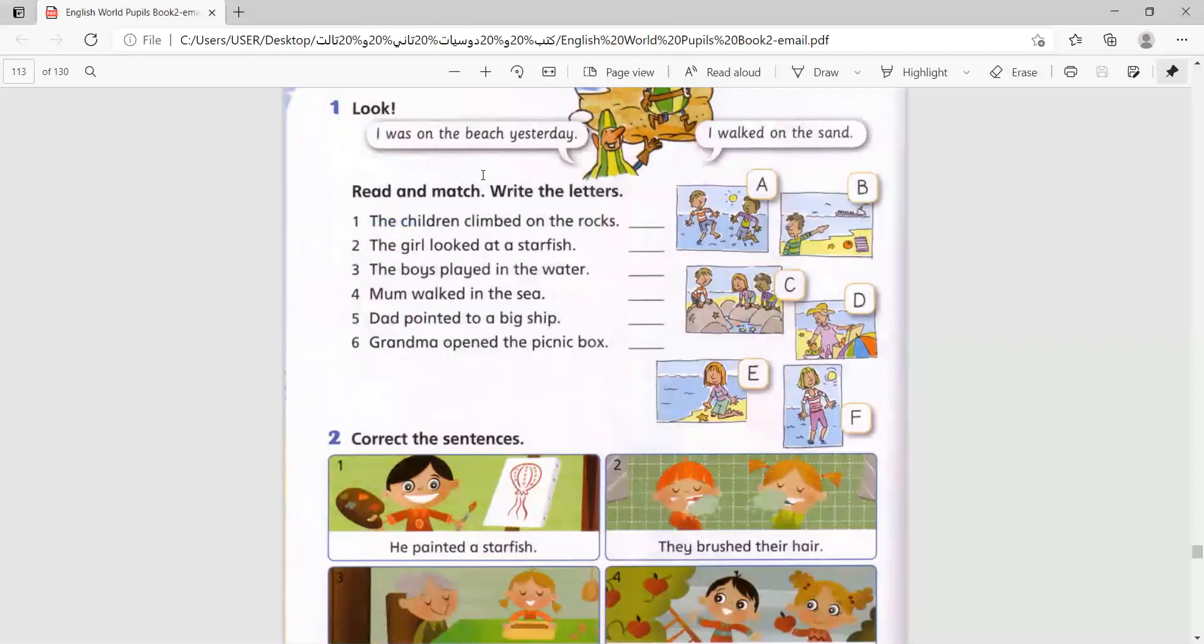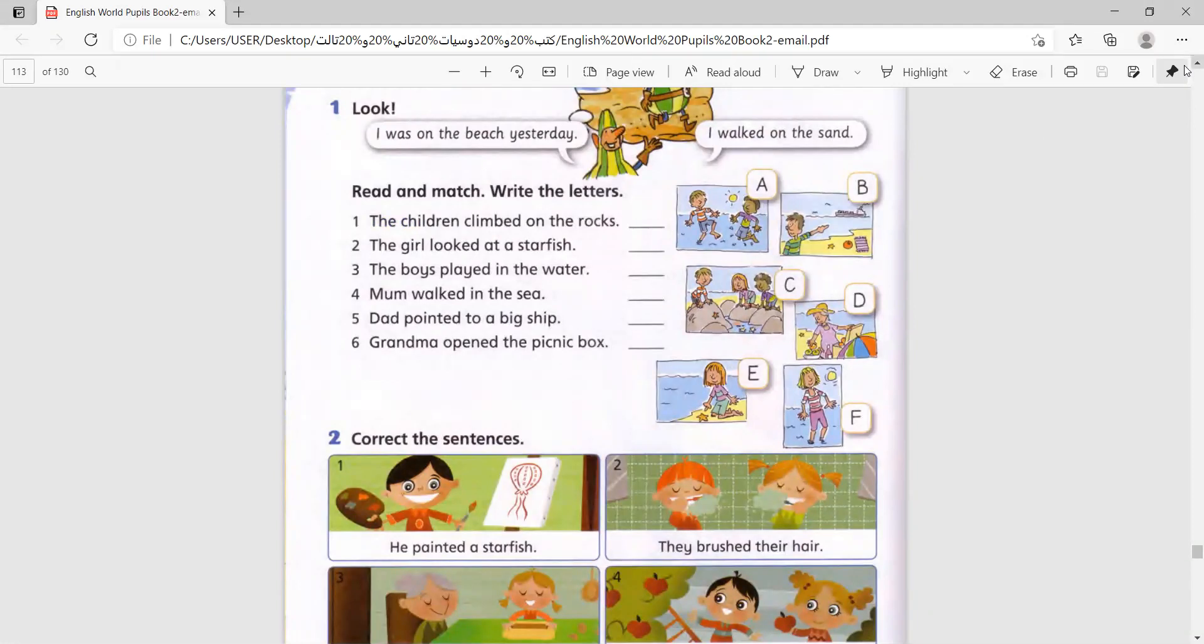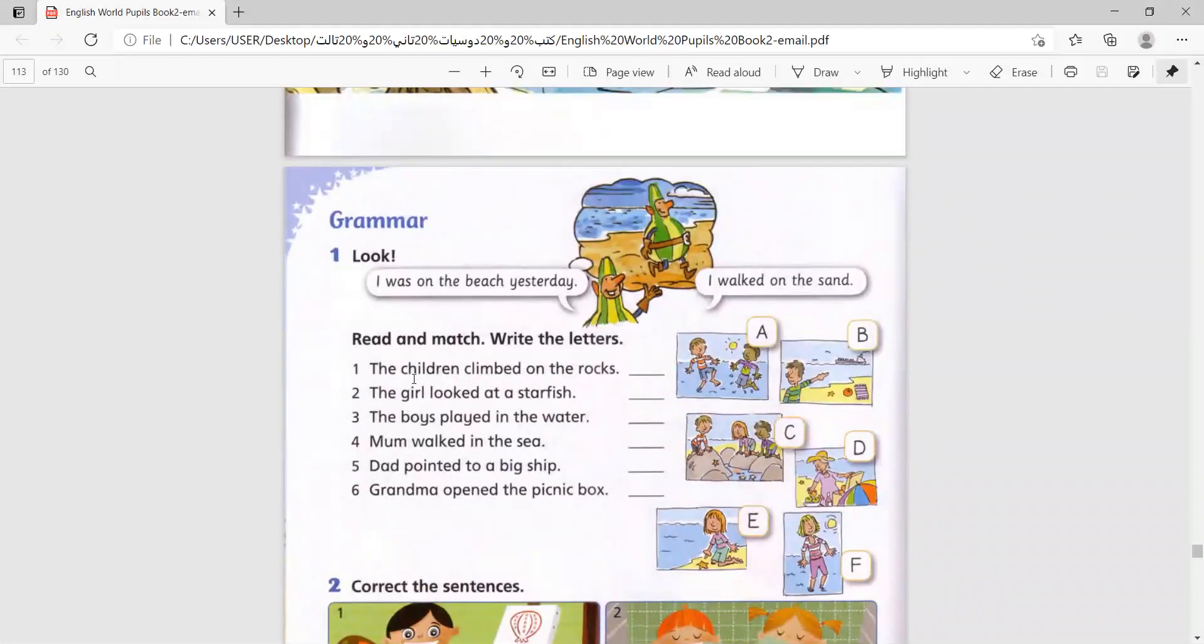Read and match. Write the letters. We have pictures with letters and sentences. Number one, the children climbed on the rocks. So, it is the letter C.